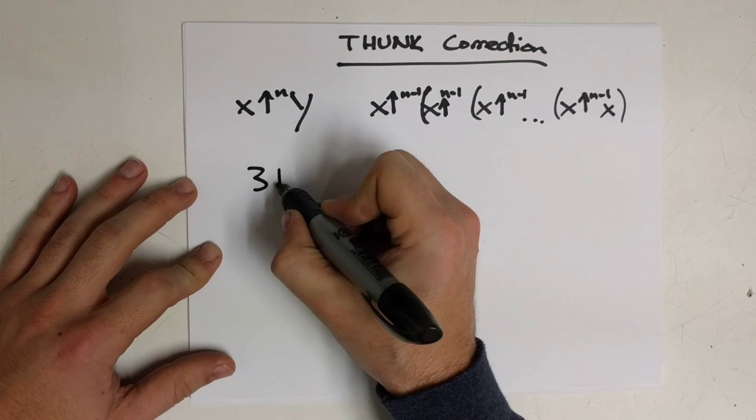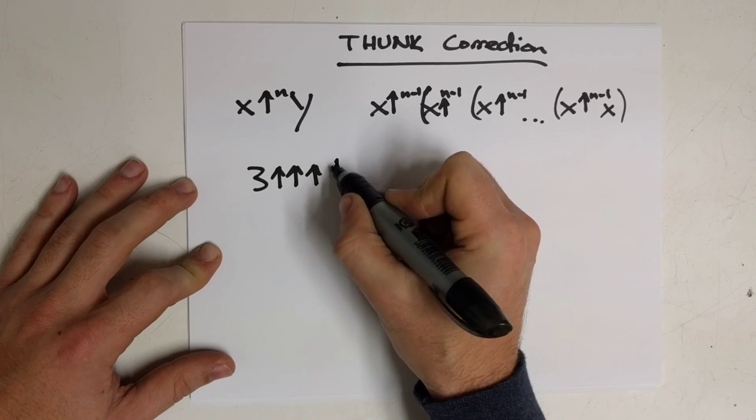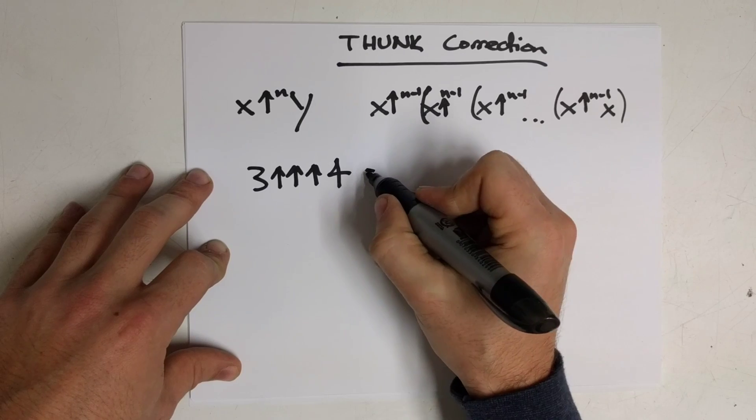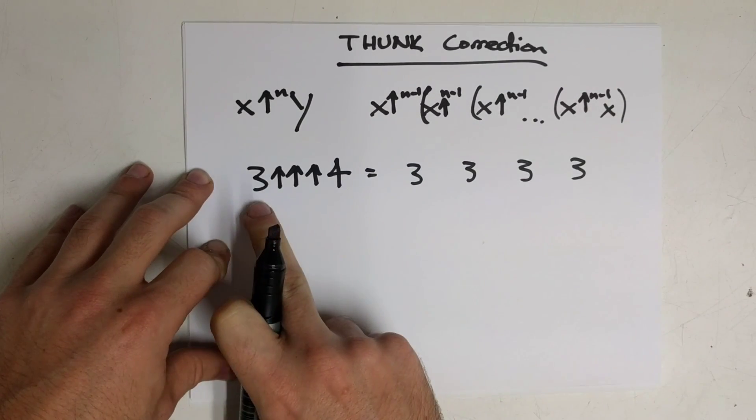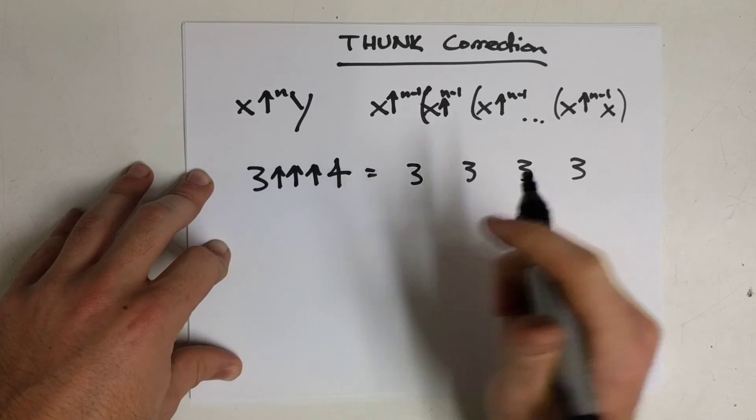So for example, 3 triple up 4 would mean that you write out four 3's, and then you separate them with n-1 arrows. So in this case n is 3, so we're going to go to 2.